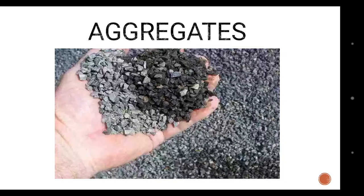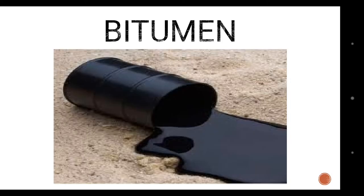So aggregates make up 95% — where does the other 5% come from? The other 5% is the bitumen. Bitumen is the black or dark viscous material that holds the aggregates together, and is composed of polycyclic hydrocarbons, or a petroleum byproduct.